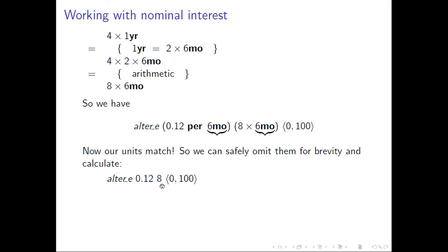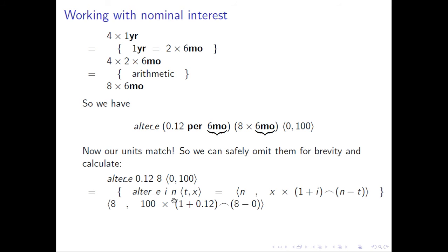alter_e(0.12, 8, 100 at zero). Remembering our definition for alter_e, this equals 100×(1 + 0.12)^(8−0), which gives 247.60 at time 8. So after four years, we will have £247.60. And we're done.